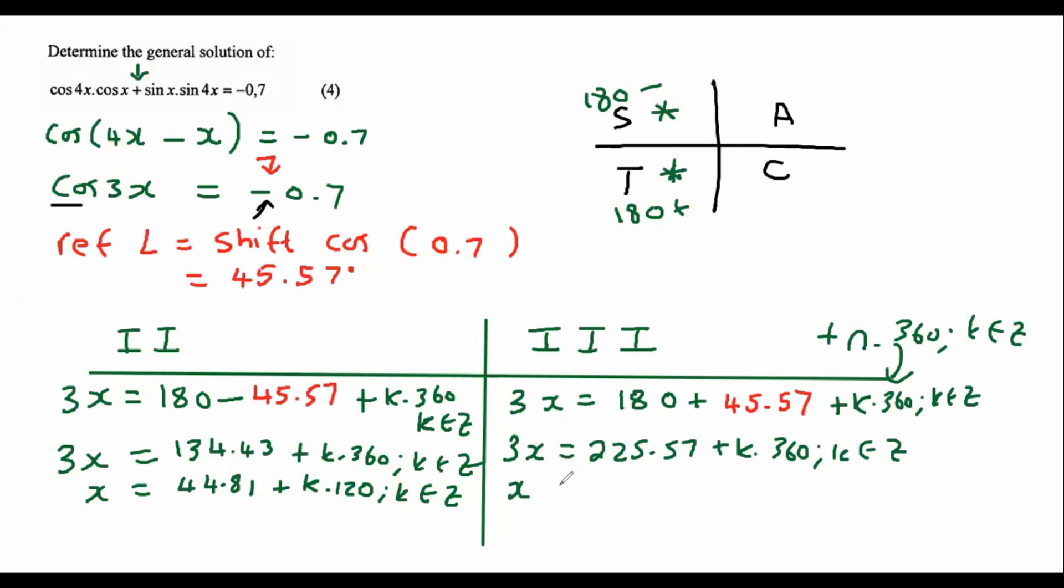And then on the other side, gives us 75.19 plus k times 120, k is an element of z.